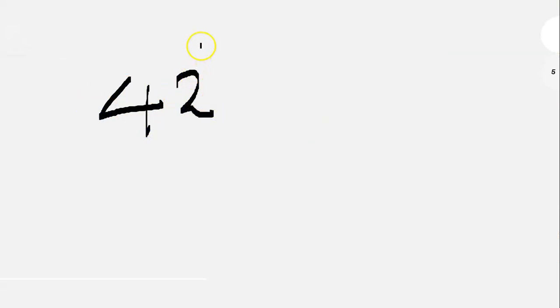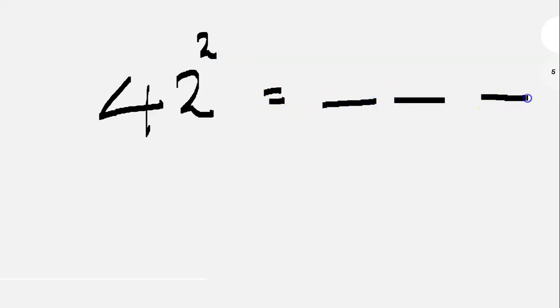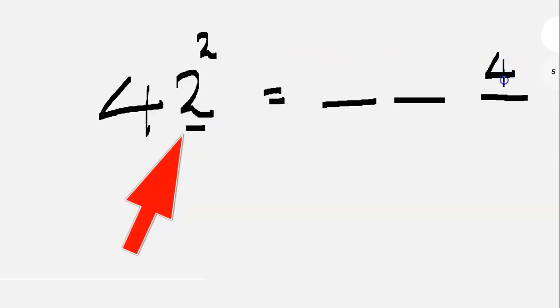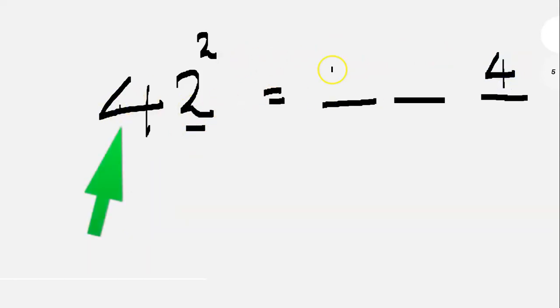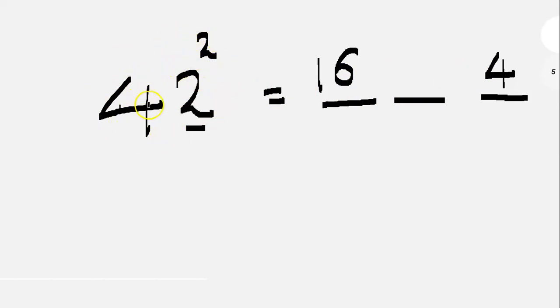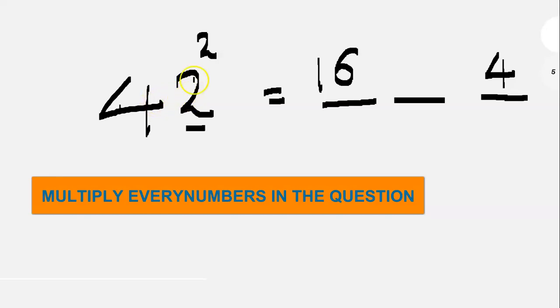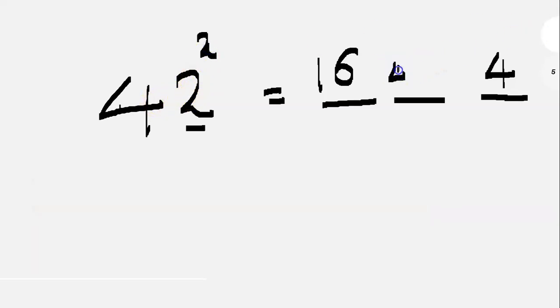First question is 42 square. 42 square is easy for me. Once you have the square of any number — for example, 2 square is 4. This is the square of any number.